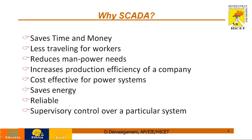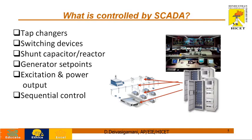Why do we go for SCADA? If we use SCADA, we get the following benefits: we can save time and money, there is less traveling for workers, and it is completely automatic. We can reduce manual interventions which increases productivity of a company. Since it is cost effective, we can save energy, and it provides reliable as well as superior control over the system.